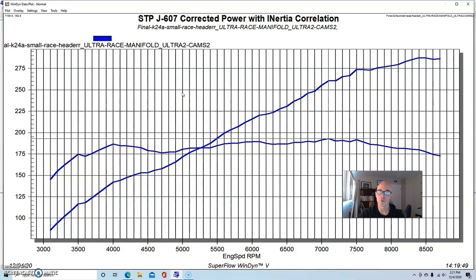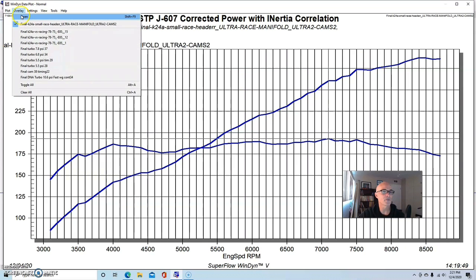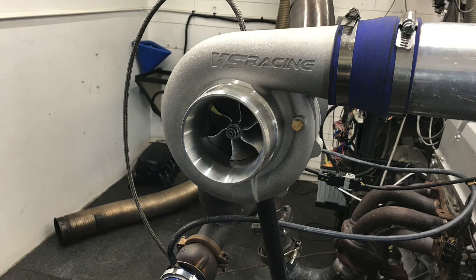We ran this K24A2, even though it's a K24 with the stock oil pump, all the way out to 8700 RPM and it was making good power out there. We ran our 78/75 and unlike the GT45 test in the previous video, I do have specs on this. The 78/75 from VS Racing is a Gen 2, very popular among the LS guys. It is a T4 hot side with 1.25 AR on the hot side.